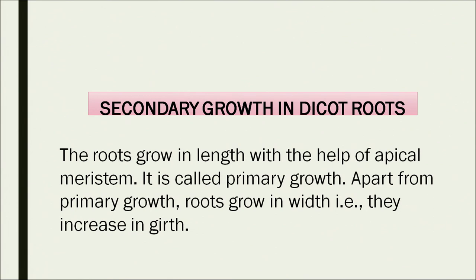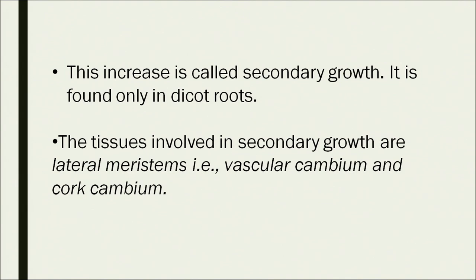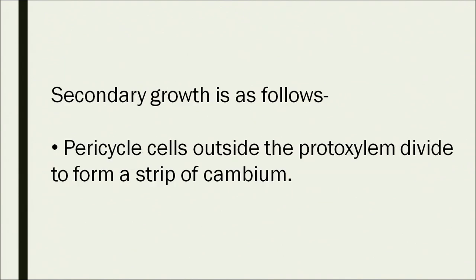Secondary growth: when plants are young and herbaceous, they are soft and have no woody structure. But in the second or third year, the plant becomes stronger and woody. This happens because of secondary growth in dicot roots. Roots grow in length with the help of apical meristem — this is primary growth. Apart from primary growth, the root also grows in width, which is an increase in girth, called secondary growth.